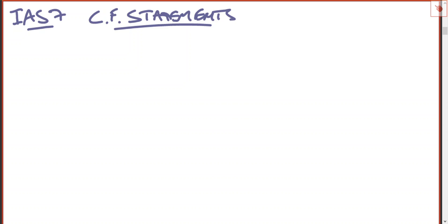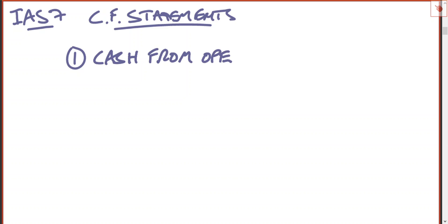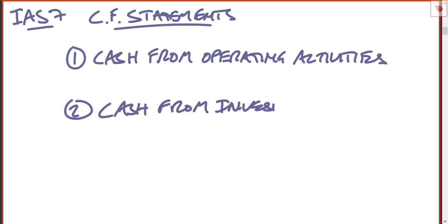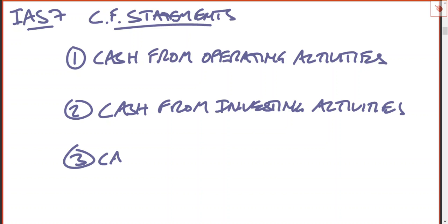You've got three headings in a cash flow statement: you've got cash from operations — operating activity; you've got cash from investing activities; and you've got cash from financing activities.